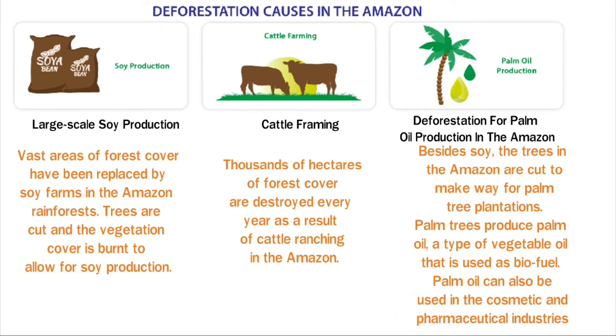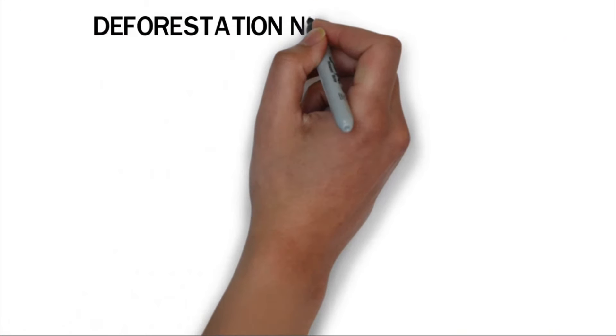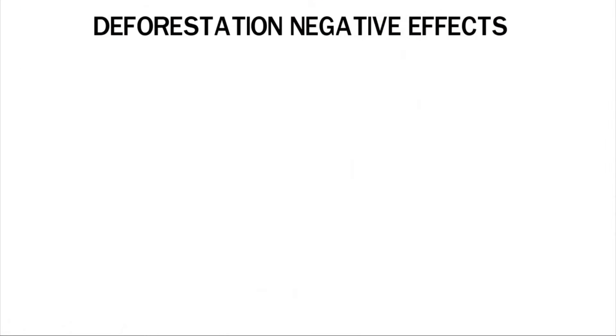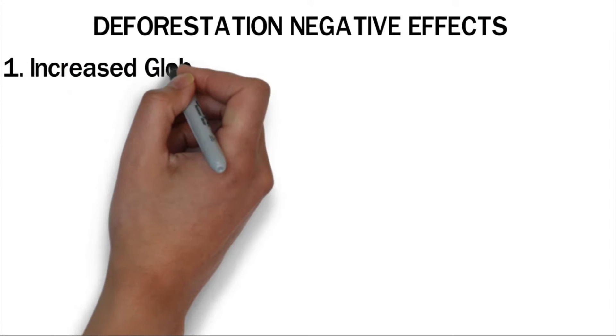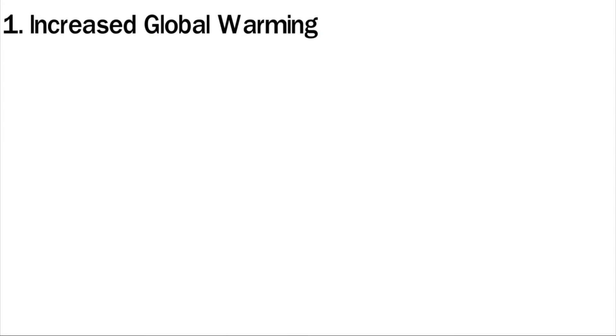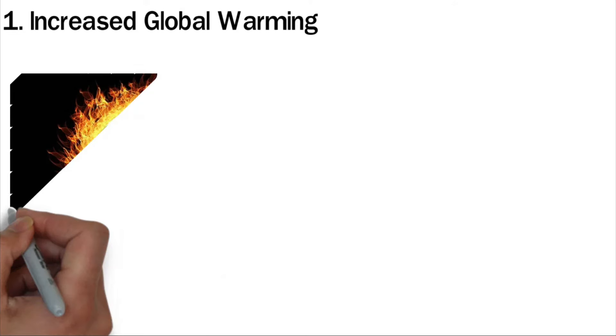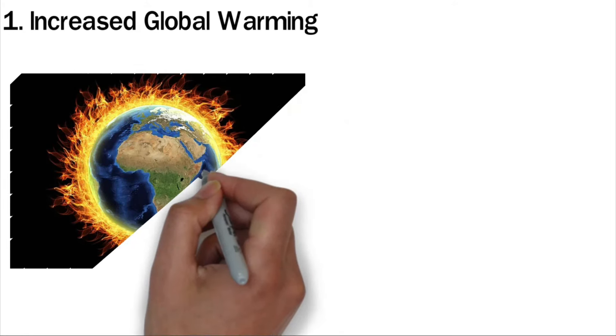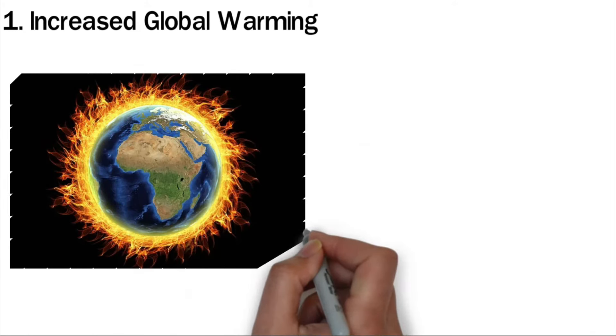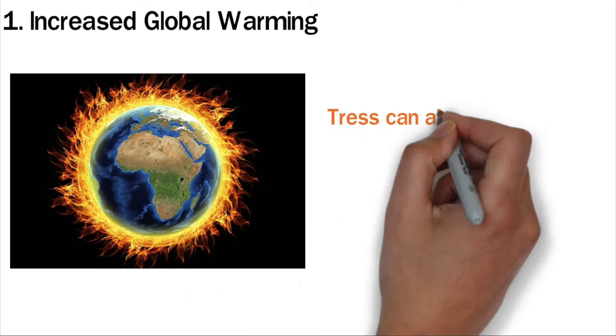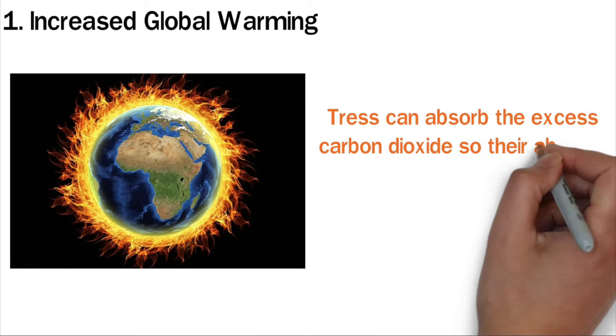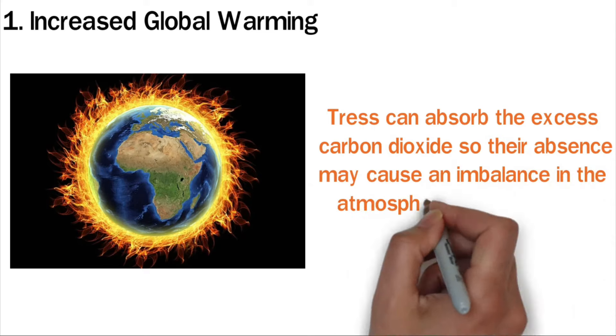Deforestation negative effects. Deforestation impacts the environment in several ways. One: Increased global warming. Global warming is the gradual increase in temperature in the earth's atmosphere. This effect is attributed to increased carbon dioxide levels. Trees can absorb the excess carbon dioxide, so their absence may cause an imbalance in the atmosphere. Consequently, the earth will start warming.